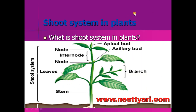The shoot system of a plant consists of the stem, branches, and leaves above the soil. A bud is the part of the plant from where a new branch arises or it sprouts into a flower. The node is the portion through which the leaf is attached to the stem, and the distance between two nodes is called the internode.